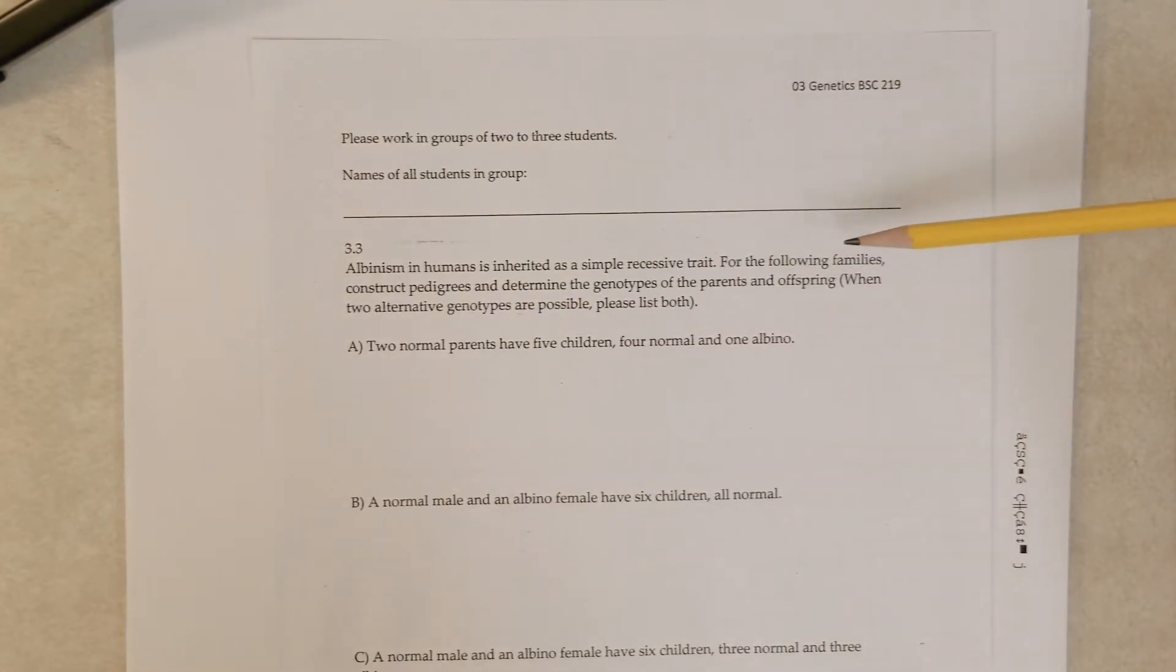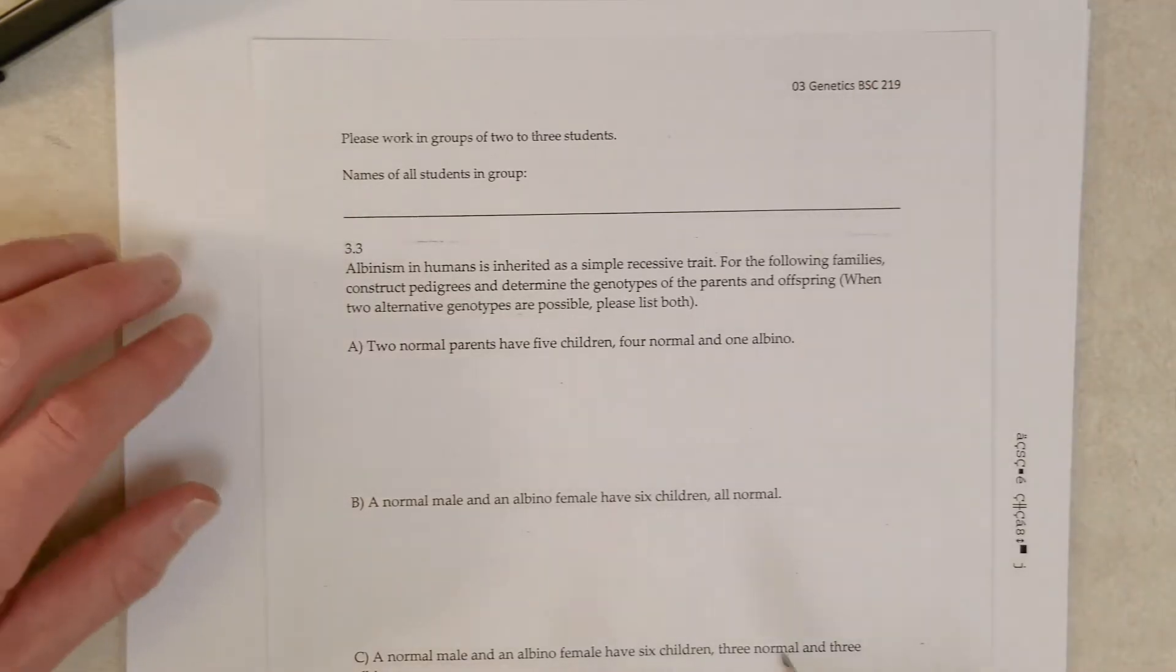This is problem 3.3 from Klug et al., Concepts in Genetics, I think 11th edition. Albinism in humans is inherited as a simple recessive trait. For the following families, construct pedigrees and determine the genotypes of the parents and offspring. When two alternative genotypes are possible, please list both. The first case: two normal parents have five children, four normal and one albino.